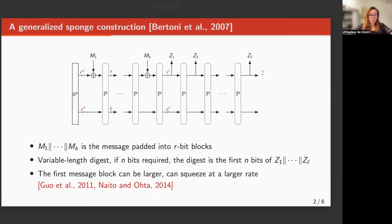There exist several tweaks to this construction, and here we focus on two of them which were introduced in the context of Photon Scheme. The first one allows to have a first message block which is larger, with a size denoted by R'', and in the second tweak, the digest is extracted with a rate R' which is larger than R.